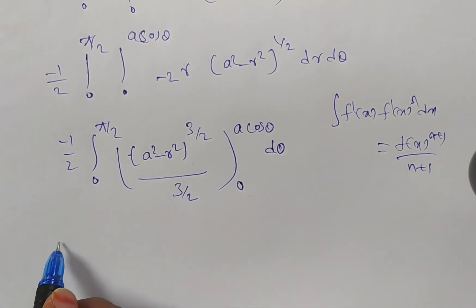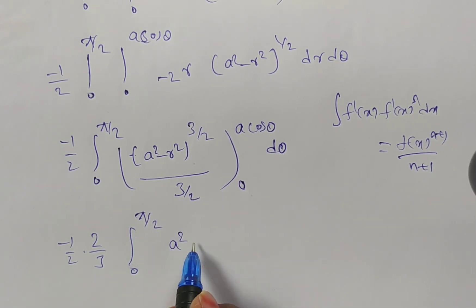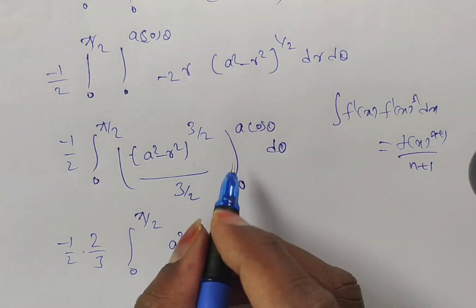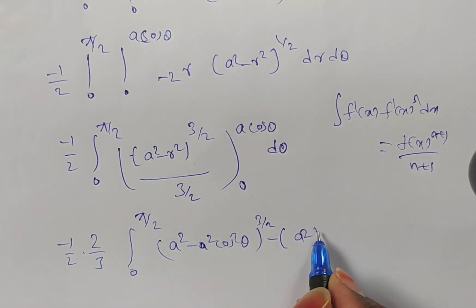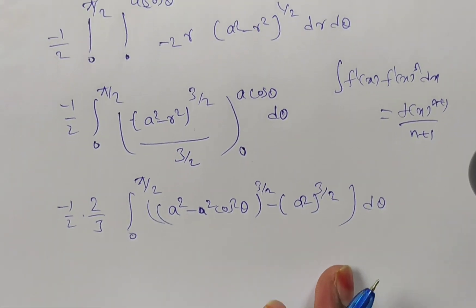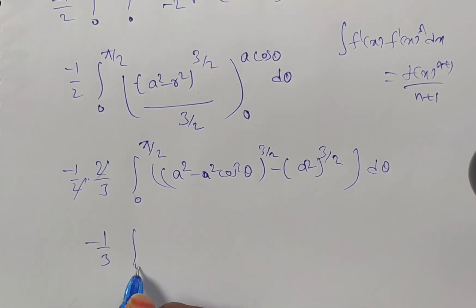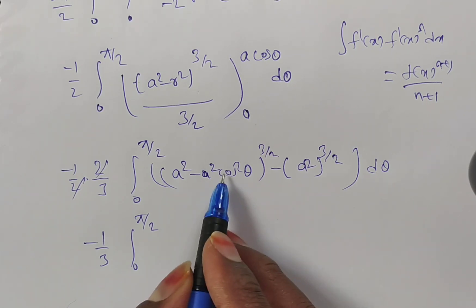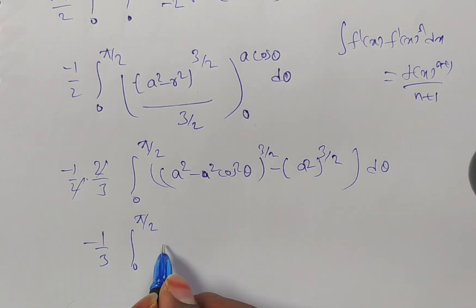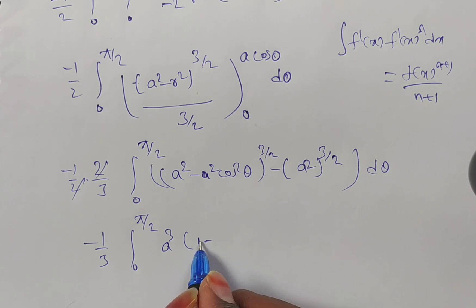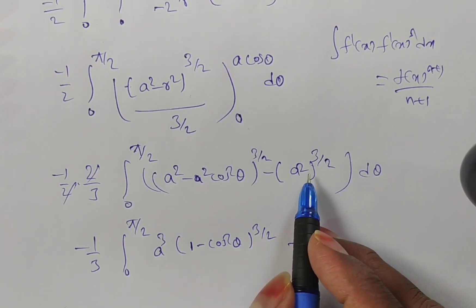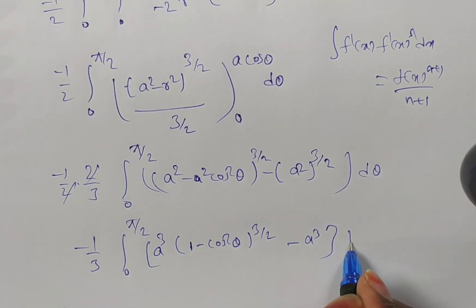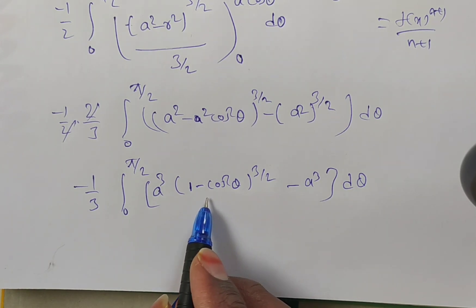We get minus 1 by 2 times integral 0 to pi by 2 of the bracket a square minus r square to the power of 3 by 2, divided by 3 by 2, with limits from 0 to a cos theta, d theta. This gives minus 1 by 3 times integral 0 to pi by 2. Substituting the upper limit r equals a cos theta gives a square minus a square cos square theta to the power 3 by 2, and the lower limit gives a square to the power 3 by 2, which is a cube. Taking a square common from the bracket, a square to the power 3 by 2 becomes a cube, and 1 minus cos square theta equals sin square theta.